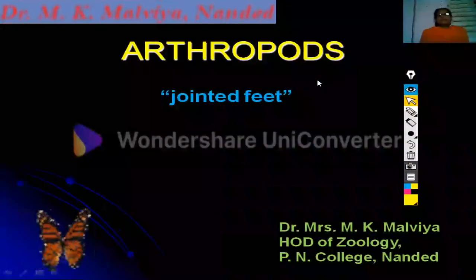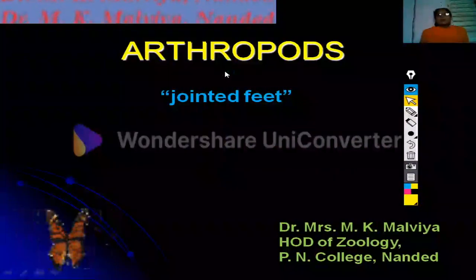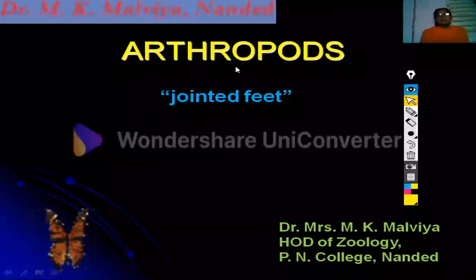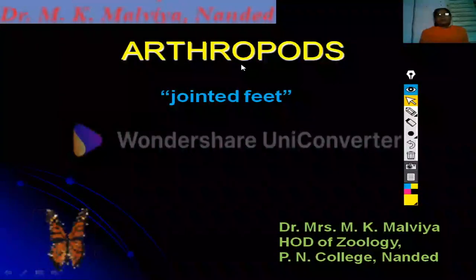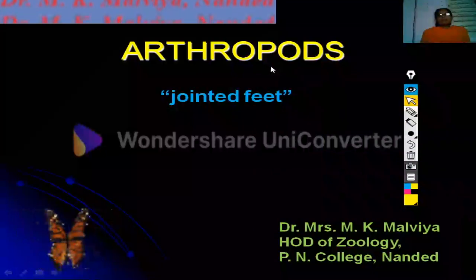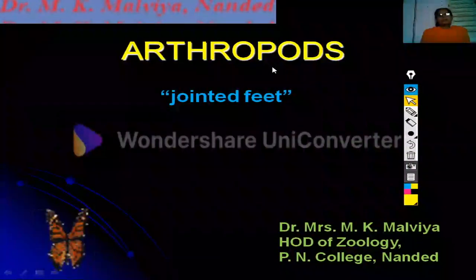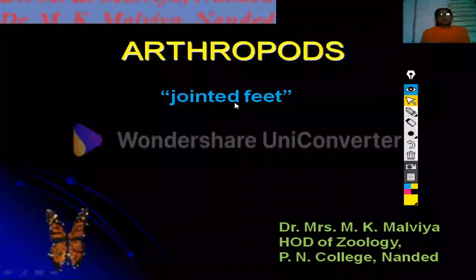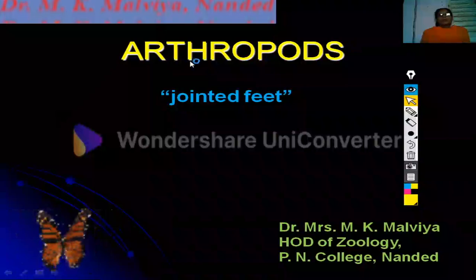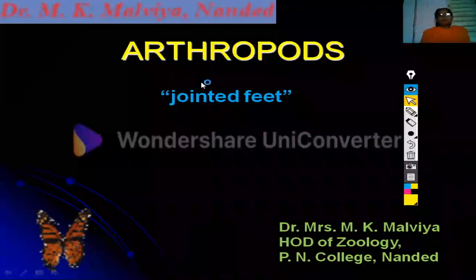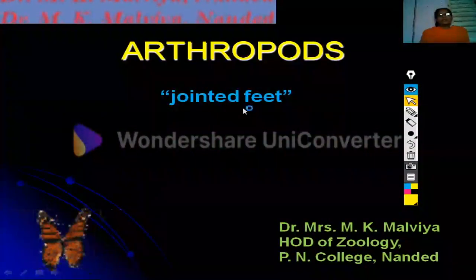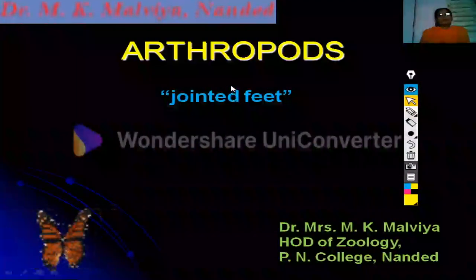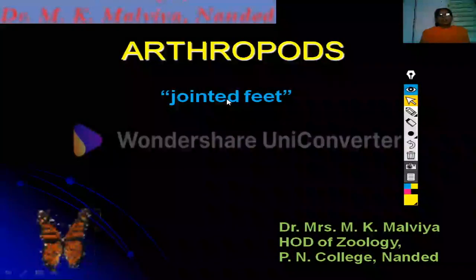Hi friends, here we are going to discuss arthropods. Arthropods is the phylum of invertebrates and this is the largest phylum of the animal kingdom. What do you mean by arthropods? Arthropod means jointed feet or leg. The animals which are having jointed legs are called as arthropods.